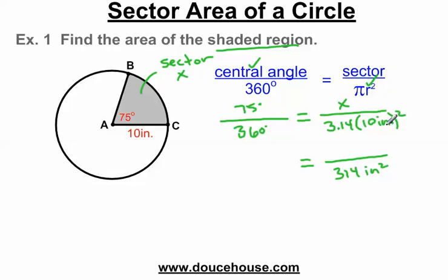When I square the 10, I'm also squaring the inches. The sector is still x, 75 degrees on top, 360 degrees on the bottom. I'm going to cross multiply. What is 75 times 314? I get 23,550 inches squared. This equals 360x.